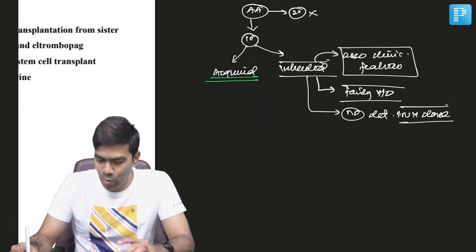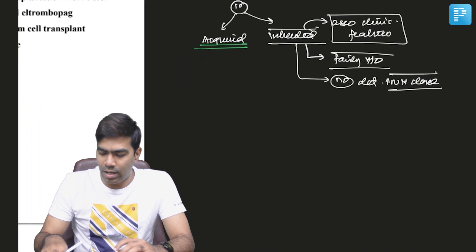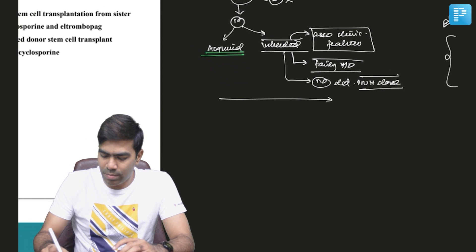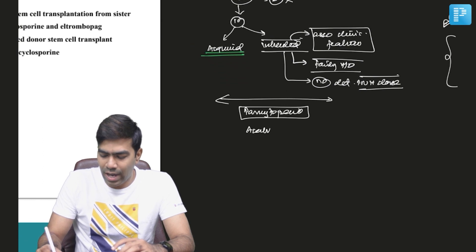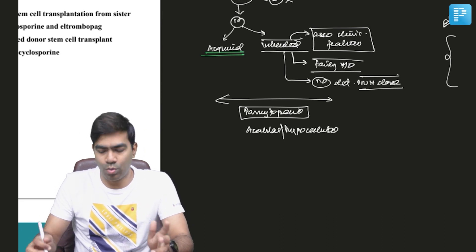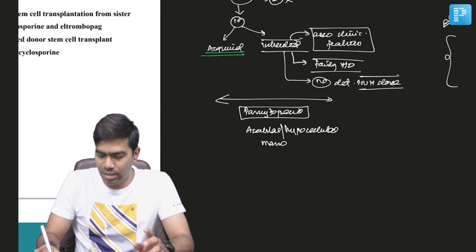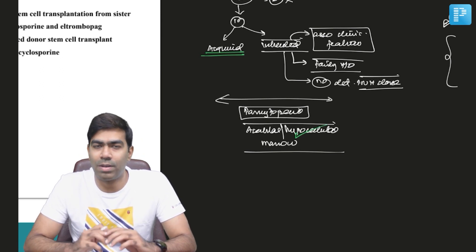And how you're going to make a diagnosis of aplastic anemia? So patients are going to have pancytopenia and patients will have an acellular or a hypocellular marrow, and there will be trilineage hypocellularity, not just involving one or two lineages. There will be a trilineage hypocellularity and the cellular elements will be replaced with fat. This is aplastic anemia.